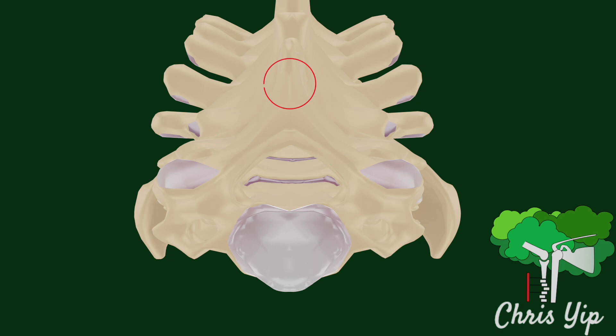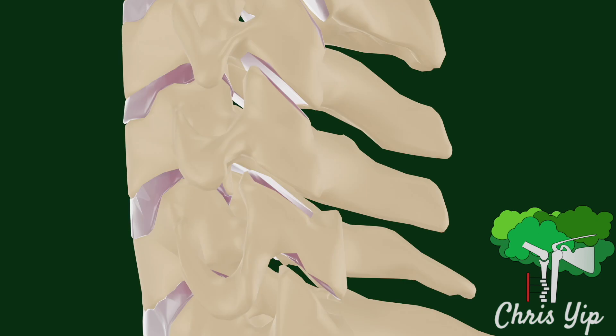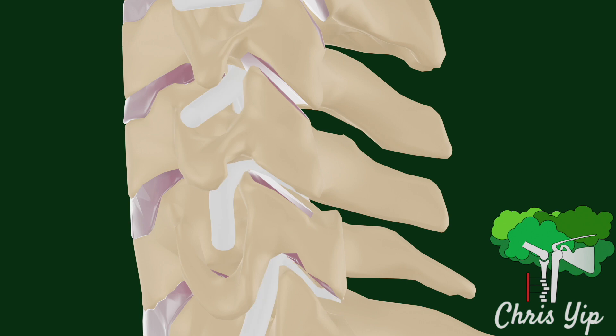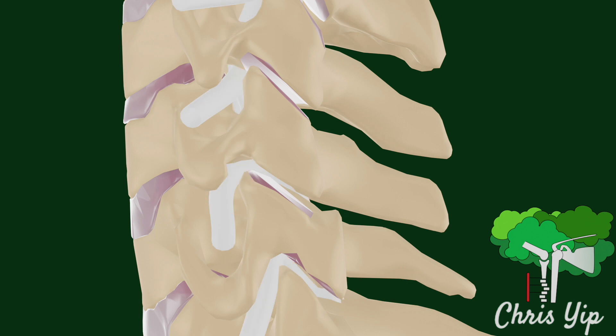The cervical vertebra also consists of the lamina and the spinous process, the superior and inferior articular processes which form the facet joints, and the uncovertebral joints between adjacent vertebrae. The spinal nerve roots travel through the intervertebral foramen to exit the spine.